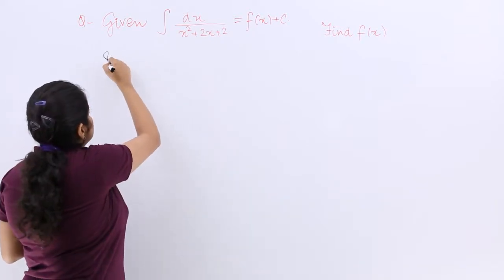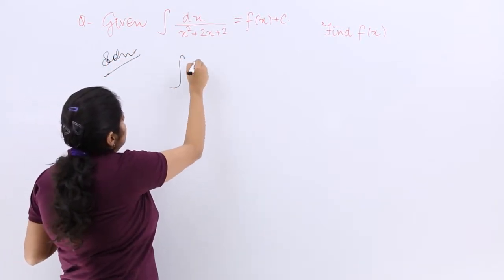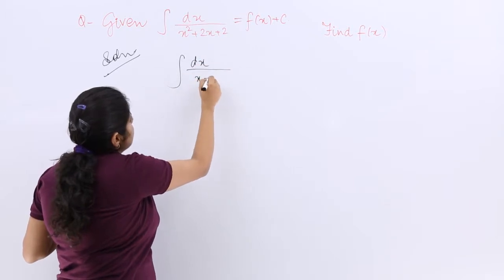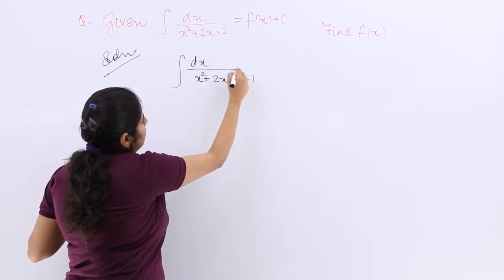So I write here solution and I have dx upon x square plus 2x plus 1 plus 1 in short.